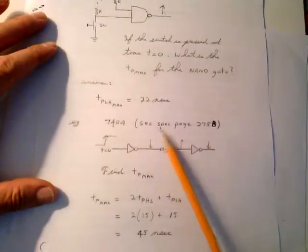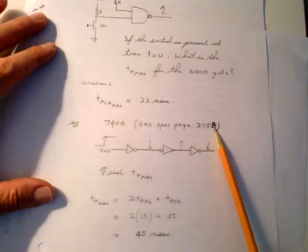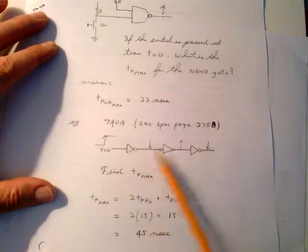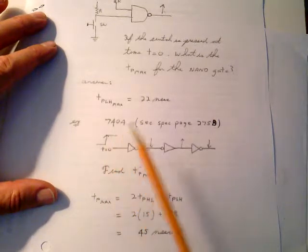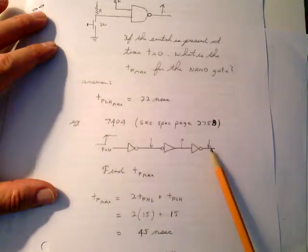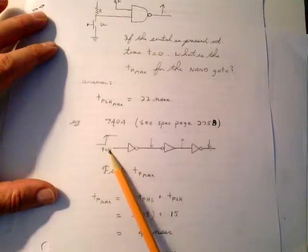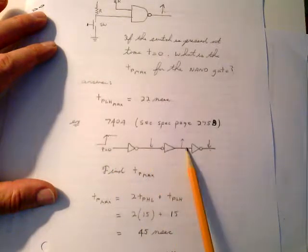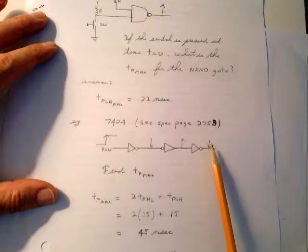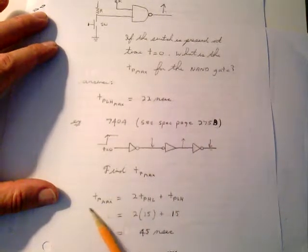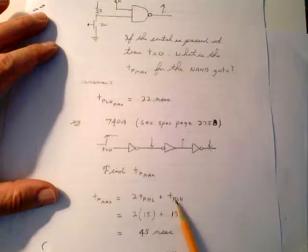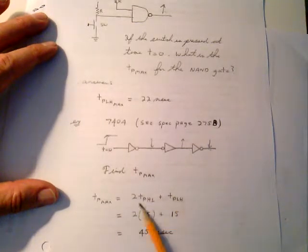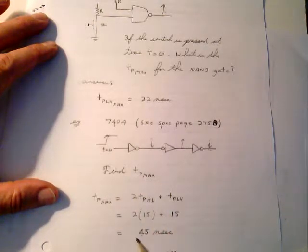Look at this example — spec page 275B. This is for the 7404 hex inverters, and we have three of them. At time T equals zero, the output is going from low to high, and I want to know the maximum propagation time. You have to define these outputs: if this has gone high, this has gone low, this has gone high, this has gone low. So the equation is: the maximum propagation time equals two propagation times high-to-low plus one propagation time low-to-high. Since both are 15 nanoseconds max, the answer is 45 nanoseconds.